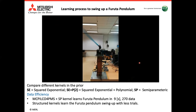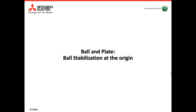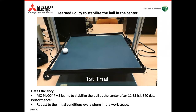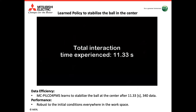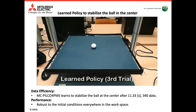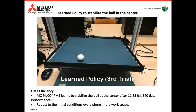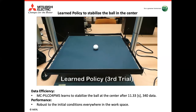Here we show the final learned policy and how it is robust to small disturbances. Second, we learn to control a ball-and-plate system. Here we can see the system and the initial exploration where the ball moves randomly across the plate. After only 11 seconds of interaction with the system — approximately 340 data points — MCPILCO learned to stabilise the ball at the center. We can see that the learned policy is robust to initial conditions from anywhere along the perimeter of the plate.